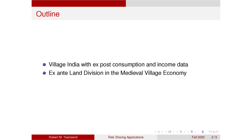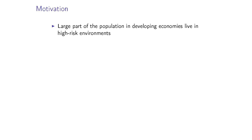We're going to do two different economies using the same theory, although the questions asked are a little different. One is Village India using consumption and income data — an ex-post version of the implications of the risk-sharing model. And also the medieval village economy, where we talk about dividing up the land.